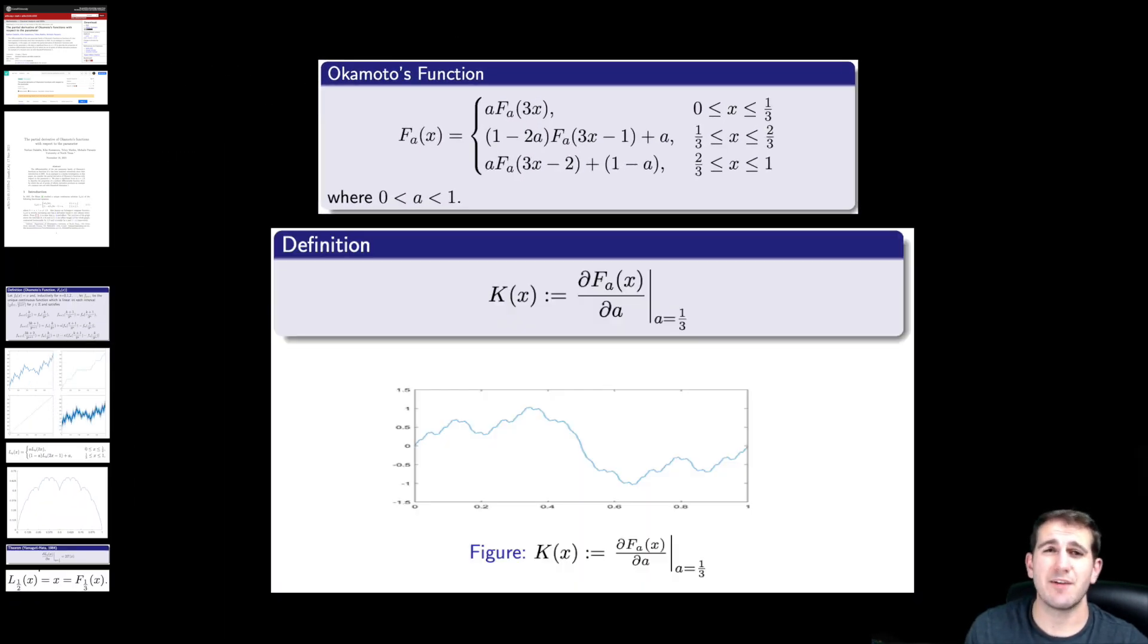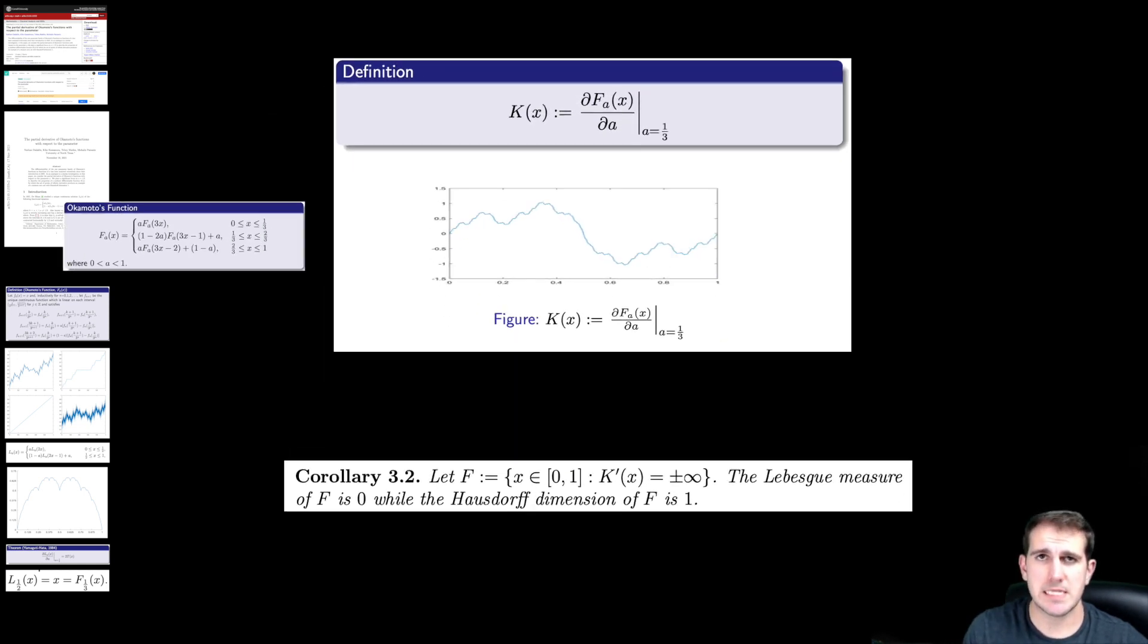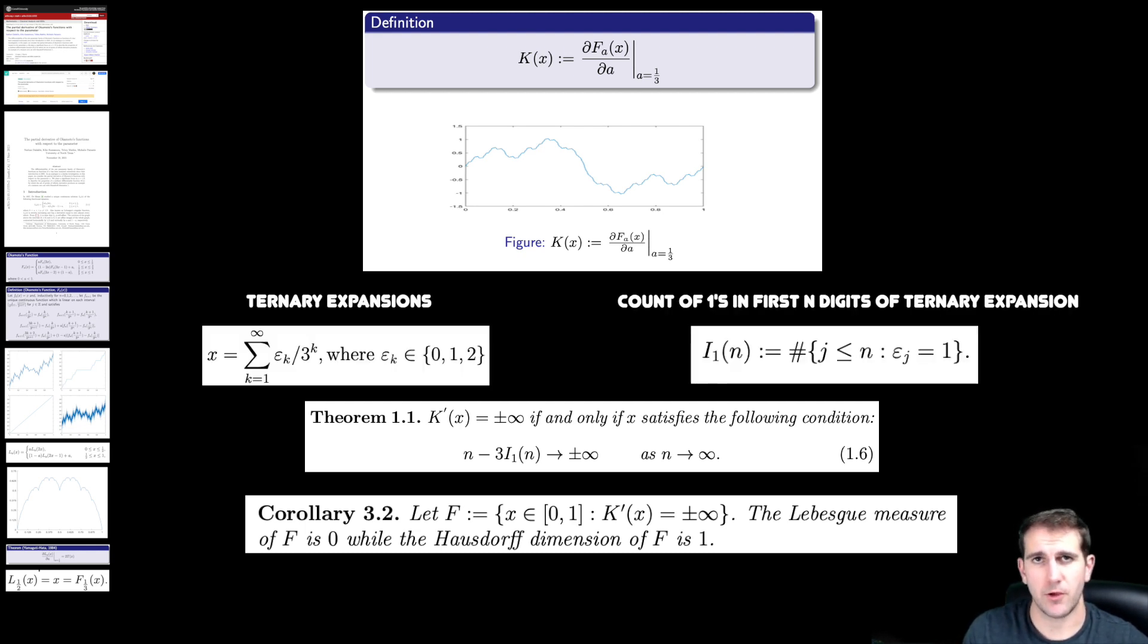So the function that we derived from this analysis, we ended up calling k of x. And it's a pretty nice example of a nowhere differentiable function as it is a continuous nowhere differentiable odd function whose points with infinite derivative turn out to give an example of a set of measure zero that also has Hasdorff dimension one. We were also able to nicely characterize the cases where infinite derivatives occur based on the ternary expansion of the function's input value.